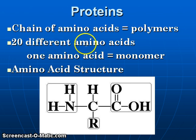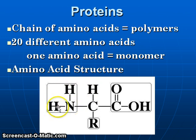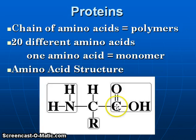There are 20 different amino acids that can make up proteins. The generic structure for an amino acid is as follows: we have a central carbon atom, which is always bonded to a hydrogen. There is an amine group, NH2, and there is a carboxyl group or a carboxylic acid, COOH.